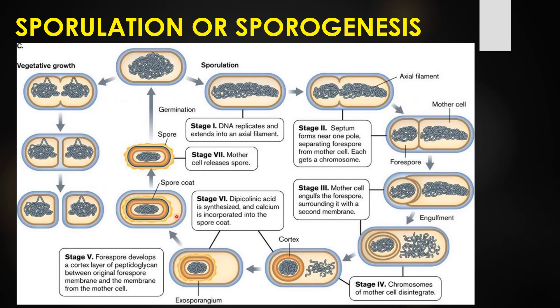In the final stage, stage seven, the mother cell releases the spores. The endospores are present within the mother cell, and at the end of the sporulation cycle the mother cell releases the endospores. The endospores then come out and start to germinate as vegetative cells. This completes the sporulation, sporogenesis, or endospore-forming cycle.